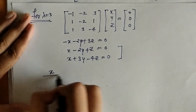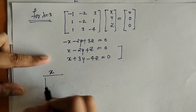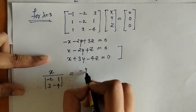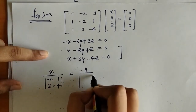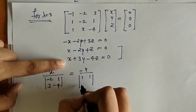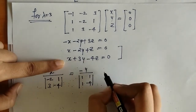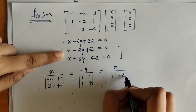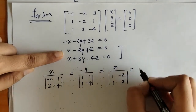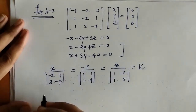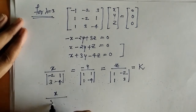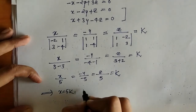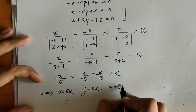Applying Cramer's rule: x over the determinant of remaining coefficients minus 2, 1, 3, minus 4; then minus y over coefficients 1, 1, 1, minus 4; and z over remaining coefficients of x and y, equal to proportional constant k. Simplifying, we get x equals 5k, y equals 5k, and z equals 5k.